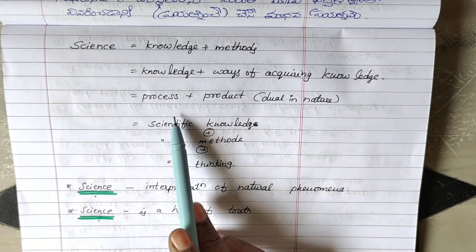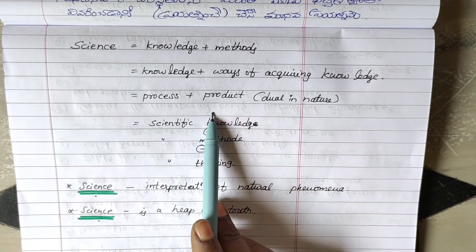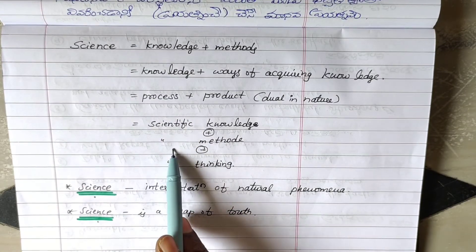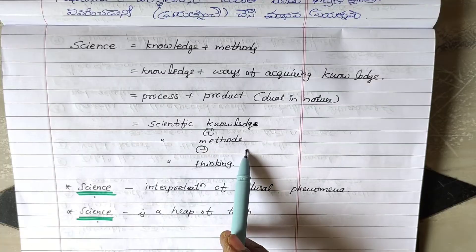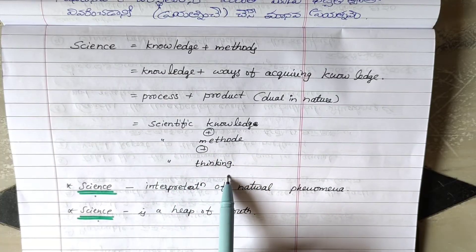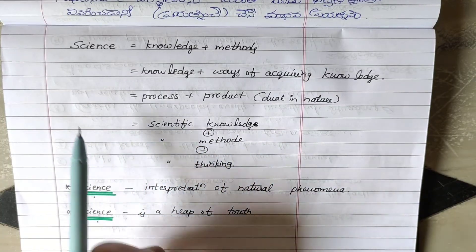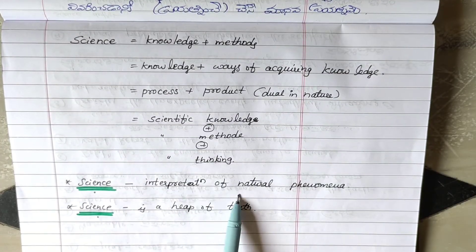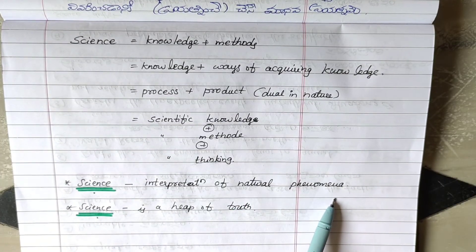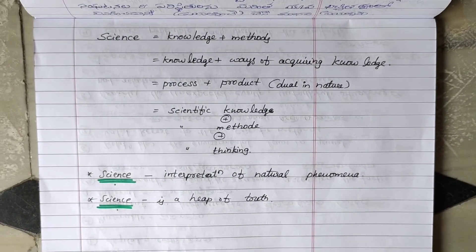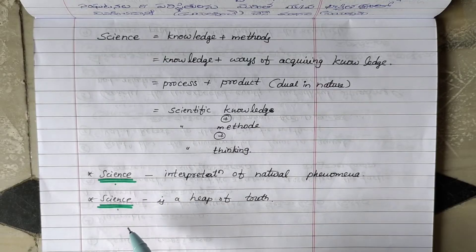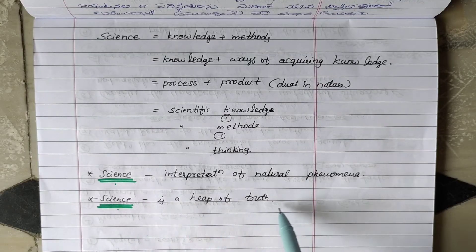Scientific information is knowledge plus scientific method plus scientific thinking — the combination of science. Next, science is an interpretation of our natural phenomenon: Sahajadrugvishyaalayokavivirana is science. Next, science is a heap of truth.